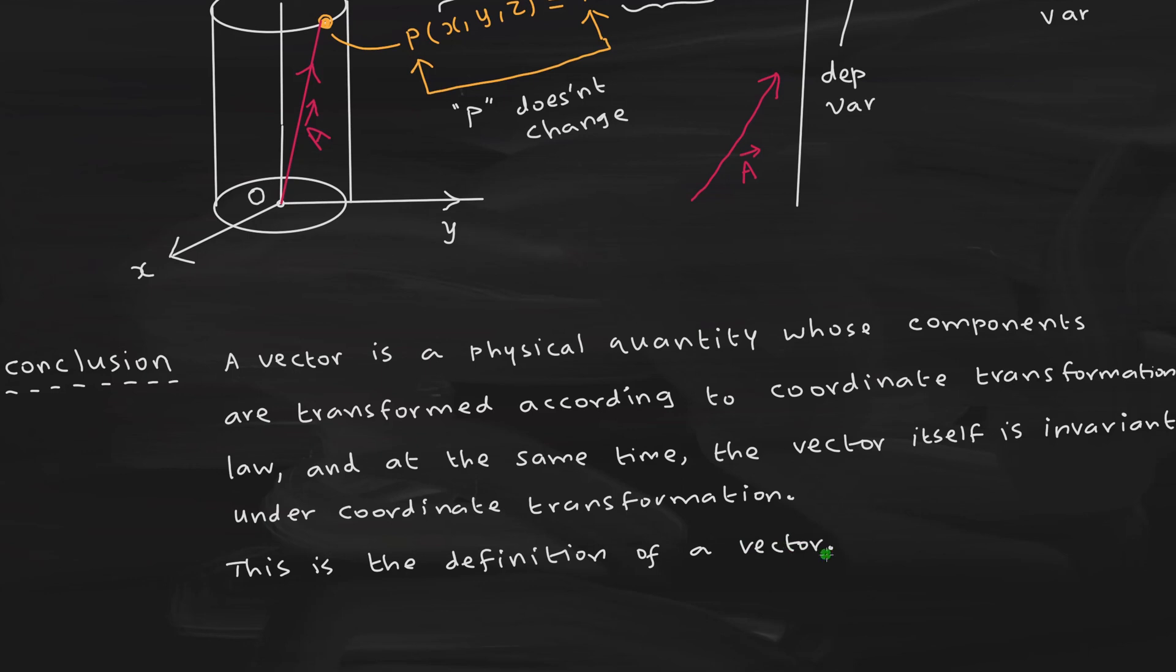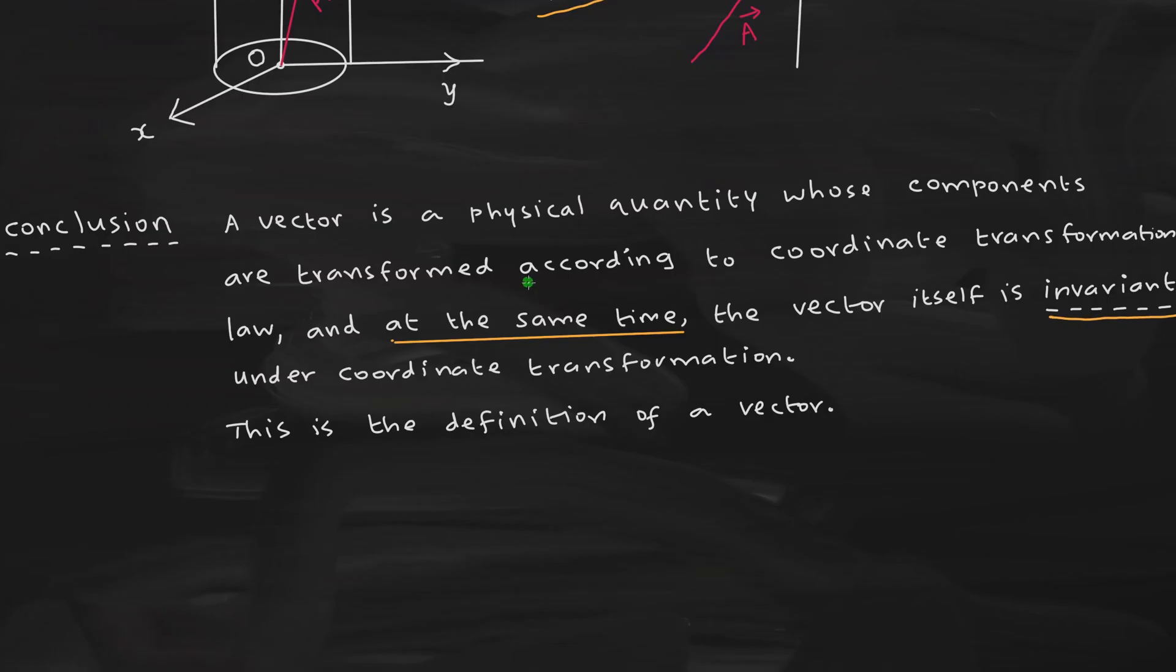Let us now see what is the mathematical definition for a vector. Here, the vector is a physical quantity whose components are transformed according to the coordinate transformation law. And at the same time, the vector itself is invariant under coordinate transformation. What do you mean by invariant? Invariant means does not change. The components of the physical quantity will change according to some prescribed rule. It will not change randomly. According to some rule only, it will change. What rule it will change? The answer is there. According to the coordinate transformation law.